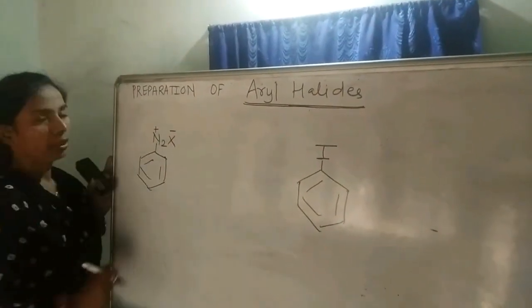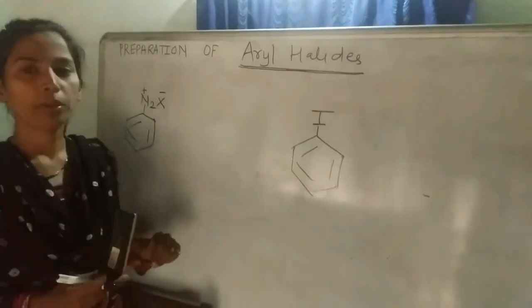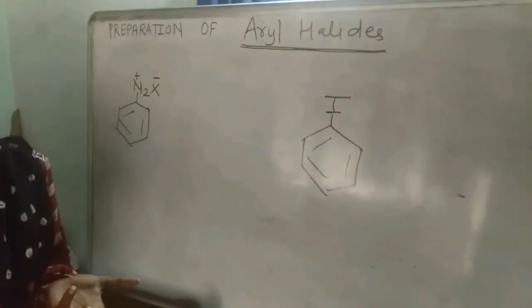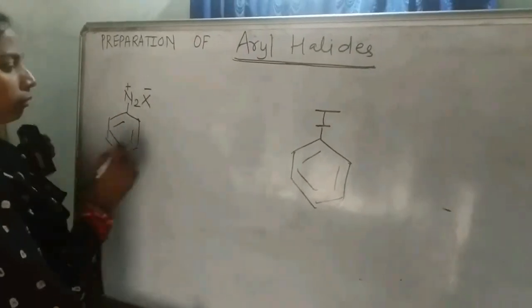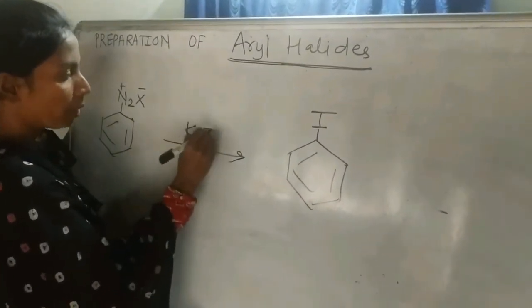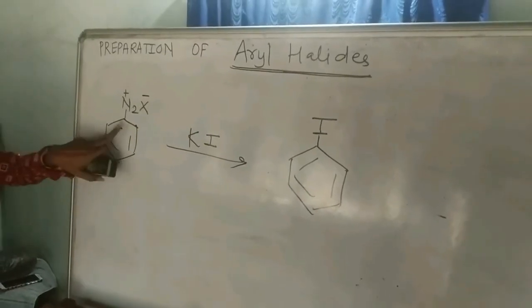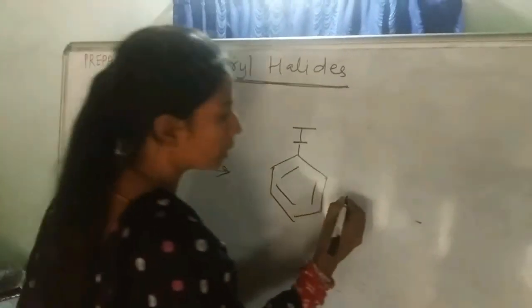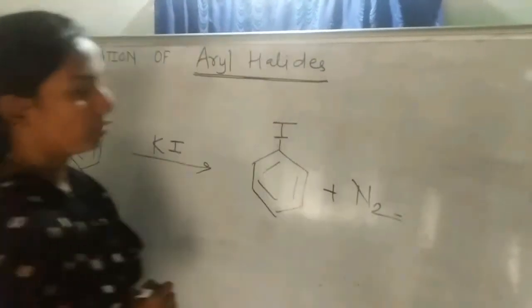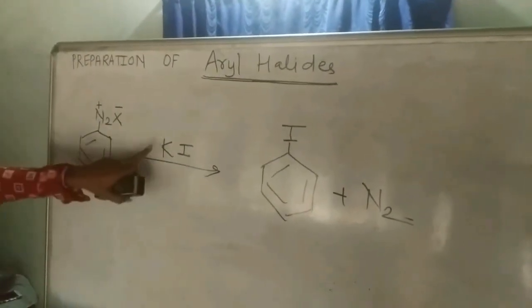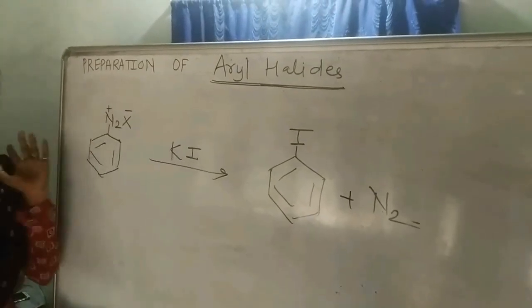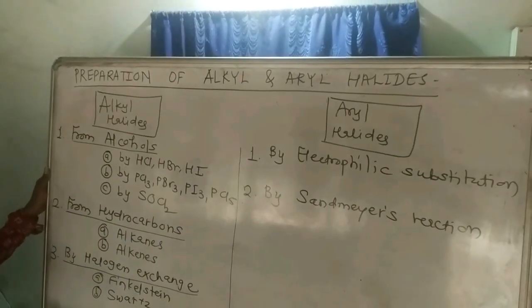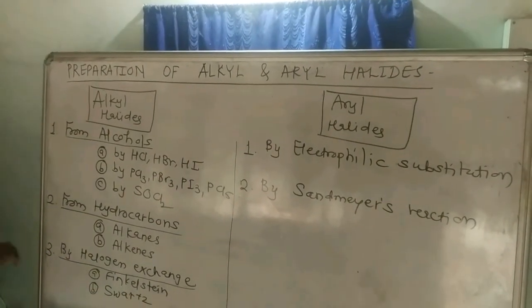The diazonium salt can also be converted into iodobenzene, but this does not fall under the Sandmeyer reaction because it does not use copper iodide. Instead, potassium iodide (KI) is used, and the diazonium group is replaced by iodine, always with N2 as a byproduct. This completes the preparation methods of alkyl and aryl halides.